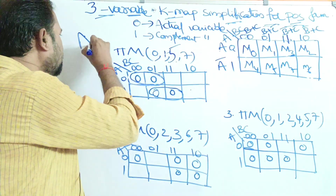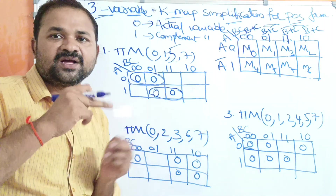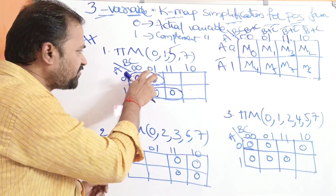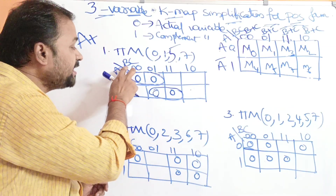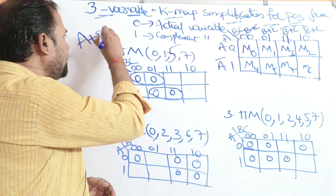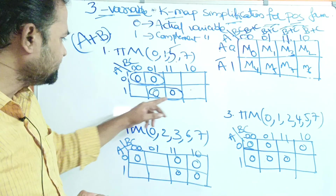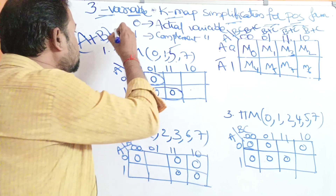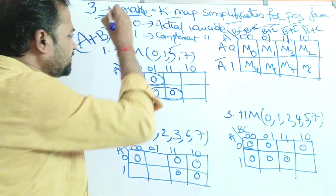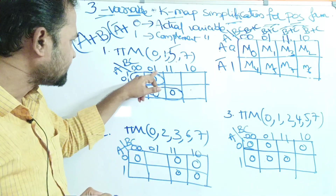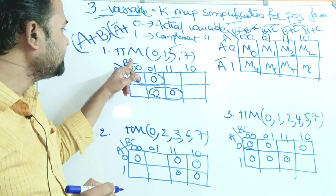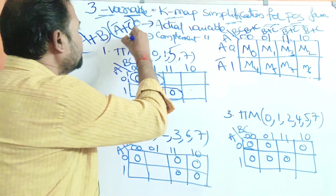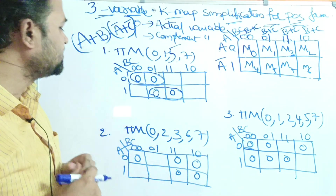For the first group: zero means actual variable, so we get A. Max terms require OR operation on literals. Observing these two adjacent cells, the first variable B is common, and zero represents actual variable, giving A + B. For the second group, both cells show A = 1 (complement), giving A bar. Observing these two cells, C is common and one means complement, giving C bar. So the simplified expression is (A + B)(A bar + C bar).